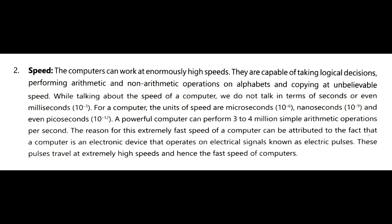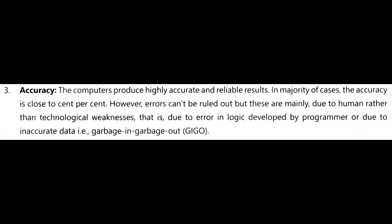Computer systems operate on electrical signals known as electric pulse. Accuracy: a computer system always gives an accurate result, but sometimes it may not be correct. This mistake is not done by the computer system; it is caused by human errors such as logical errors during program development, or inadequate or improper data provided to the computer system.